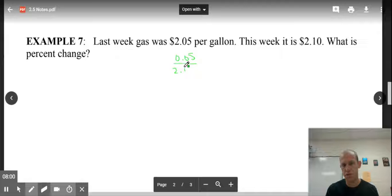When we divide those two, we will get out the number, approximately the number 0.0244. Change that number to be a percent. It's going to be 2.44%. It went from $2.05 to $2.10, which would be an increase.